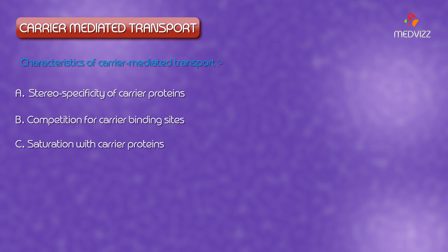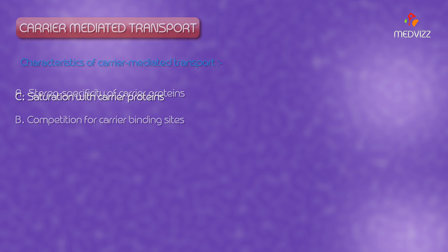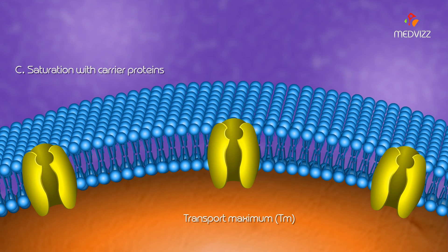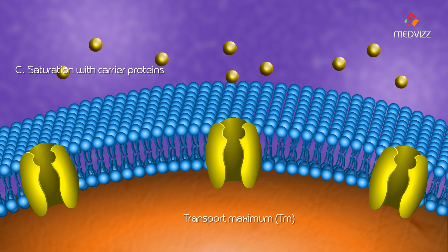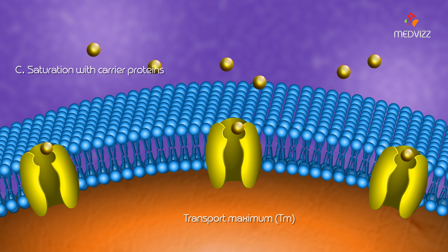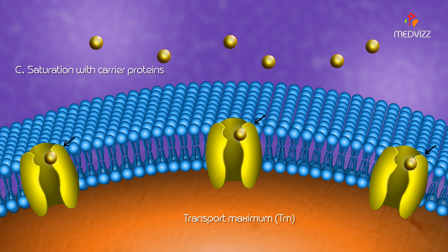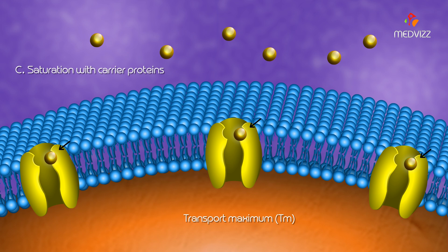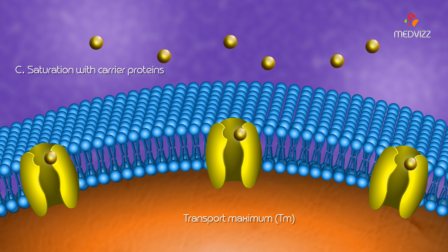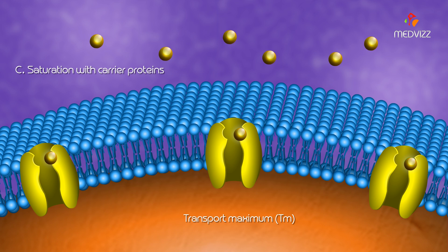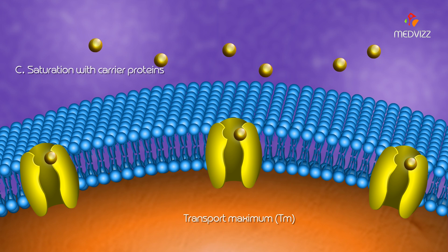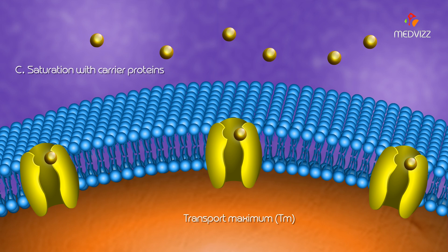Saturation with carrier proteins: transport maximum occurs when all the transport binding sites for a particular substance are occupied. Due to this, the substance cannot bind to its carrier and therefore it does not pass through the membrane.